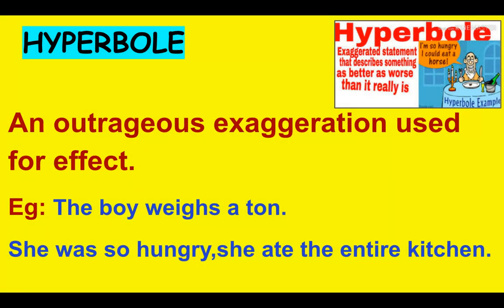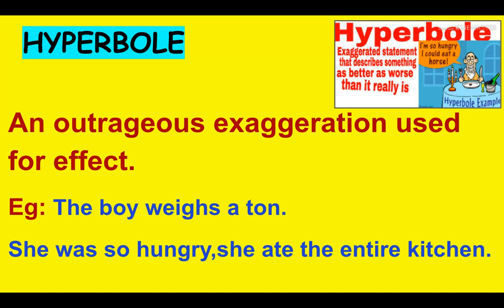Let's move on to the other one — hyperbole. When you use exaggeration to explain something, it is usage of hyperbole. For example: The boy weighs a ton. She was so hungry she ate the entire kitchen. That's not possible, isn't it? Hence, when you exaggerate something to explain your idea, it means you are using hyperbole.